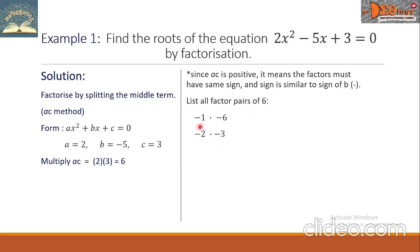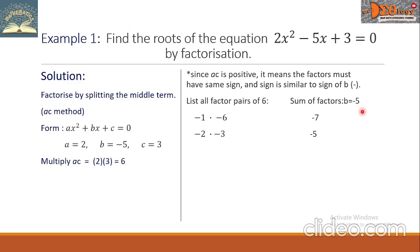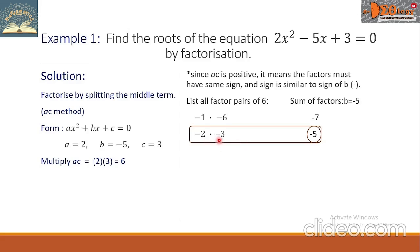The factor pairs of -6 are: (-1) × (-6) as the first pair, and (-2) × (-3) as the second pair. The sums of these pairs are -7 and -5 respectively. We look for the value of b, which is -5, in the sum column — it matches the factor pair (-2) and (-3).